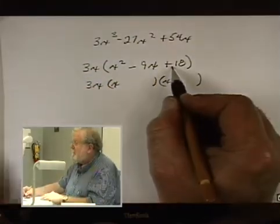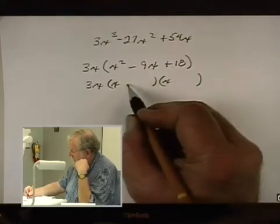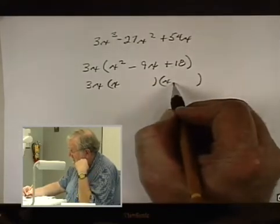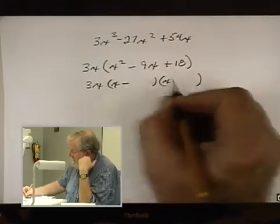We look at this side. It's plus. That means these signs either have to be both plus or both minus. We look at this sign. It's minus. So these are both minus.